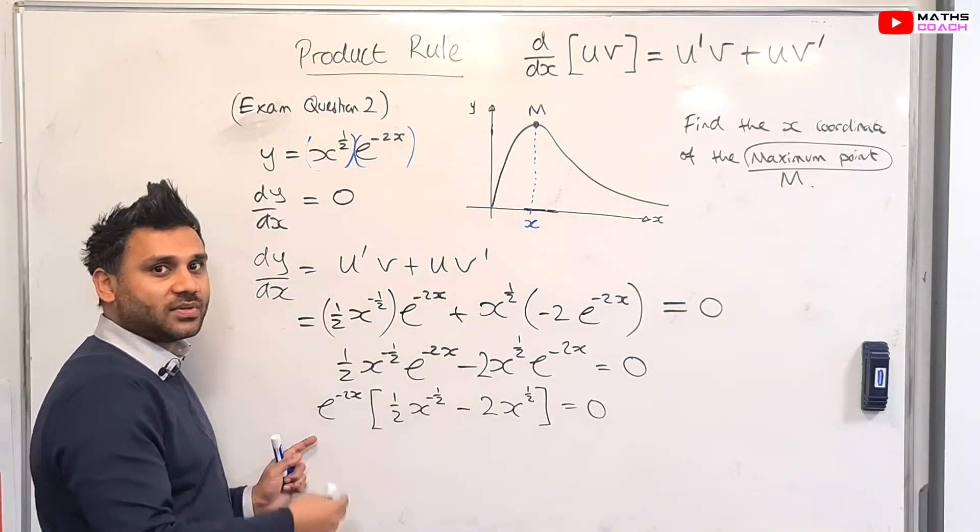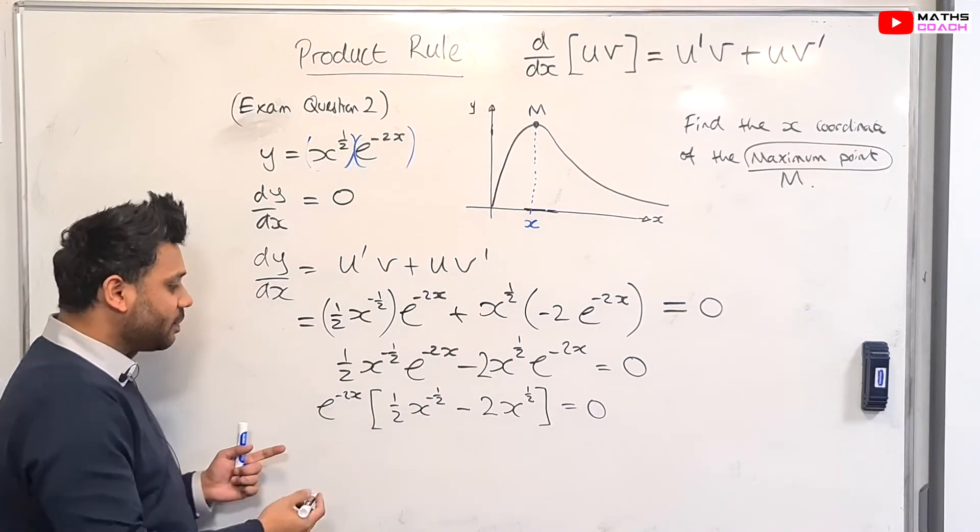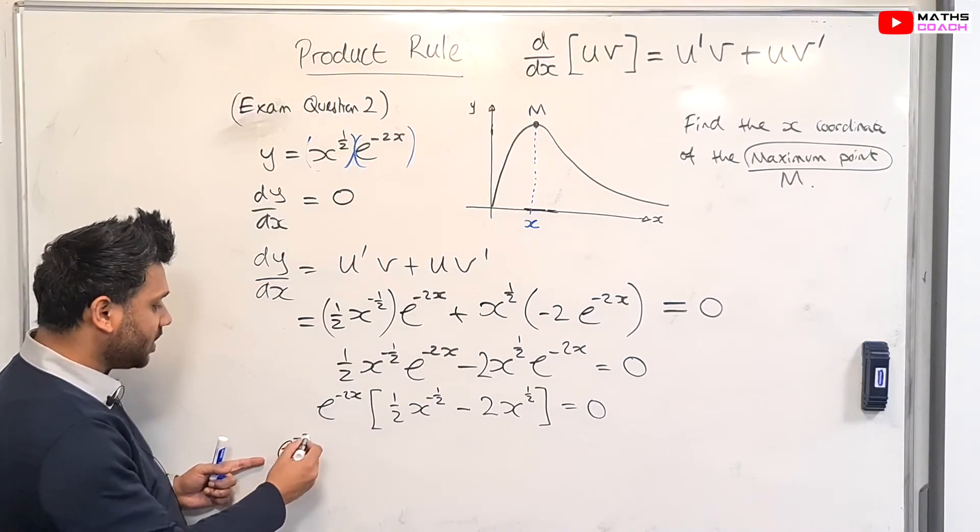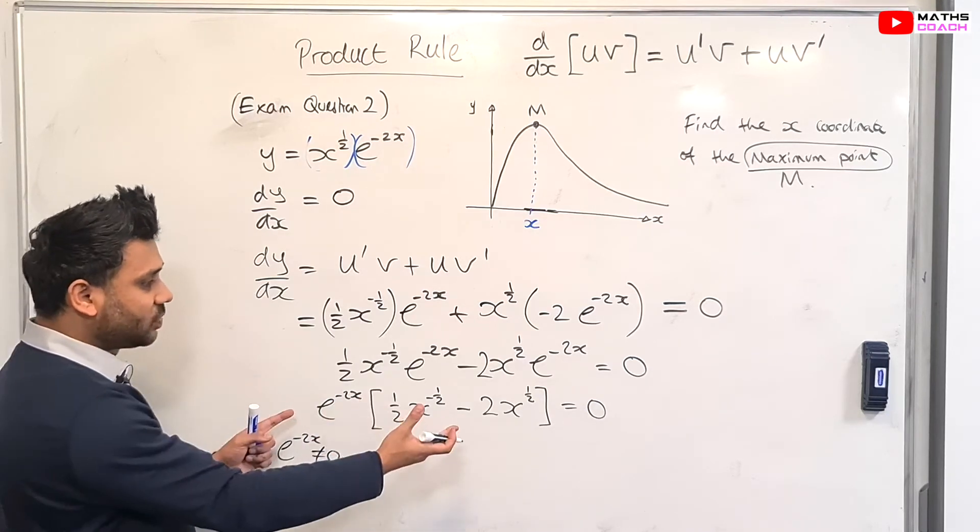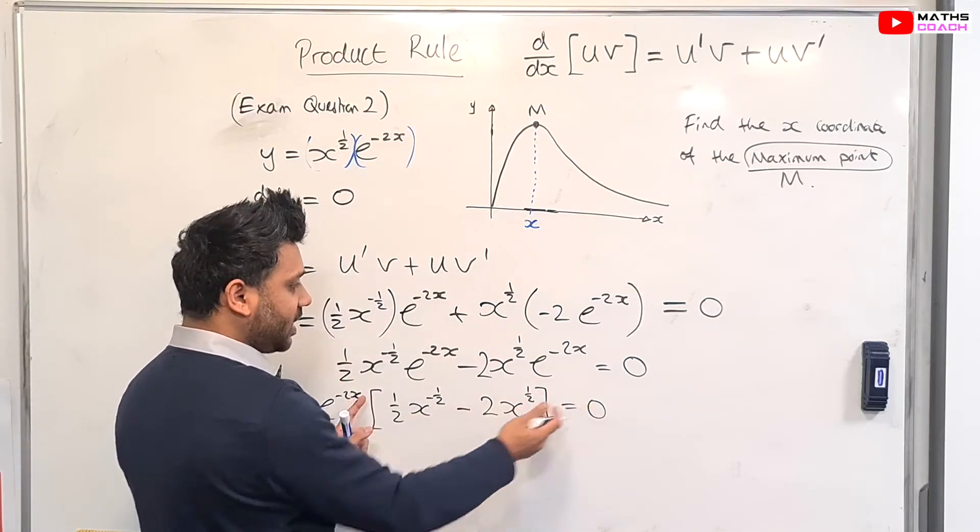Now, we have two factors multiplying to be zero, so one of them must be zero. But we know that an exponential e to the minus 2x can never be equal to zero.